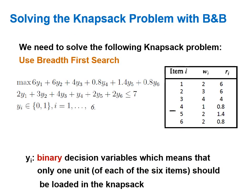We want to solve this following formulation. First, let's remember what the knapsack problem is. In a knapsack problem we want to maximize our utility or benefit. We are given six items and we want to take some of these items into our knapsack. Each item has a benefit given by ri and a weight. For example, item one has a weight of two units and a benefit of six units. We have a capacity of seven for our knapsack, and without exceeding this capacity we want to maximize total utility.